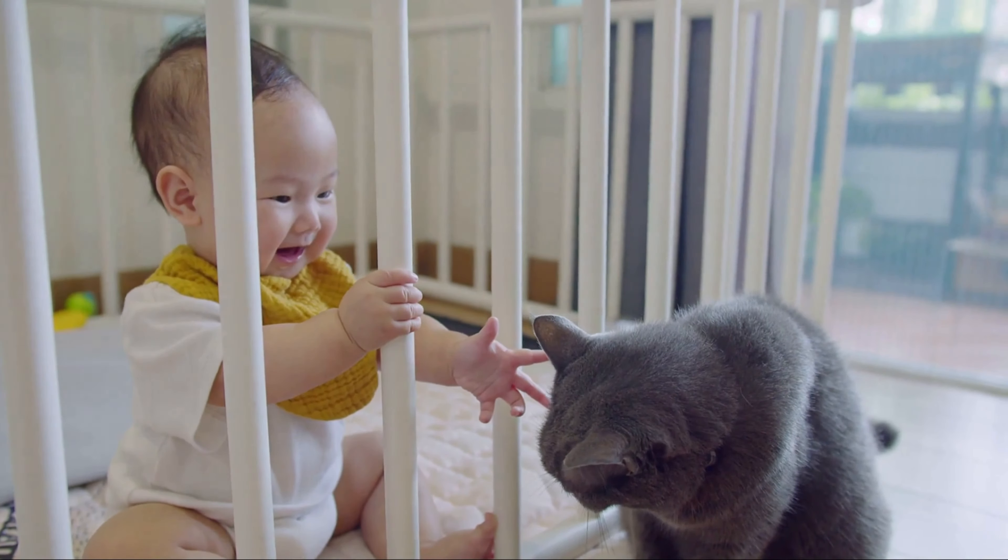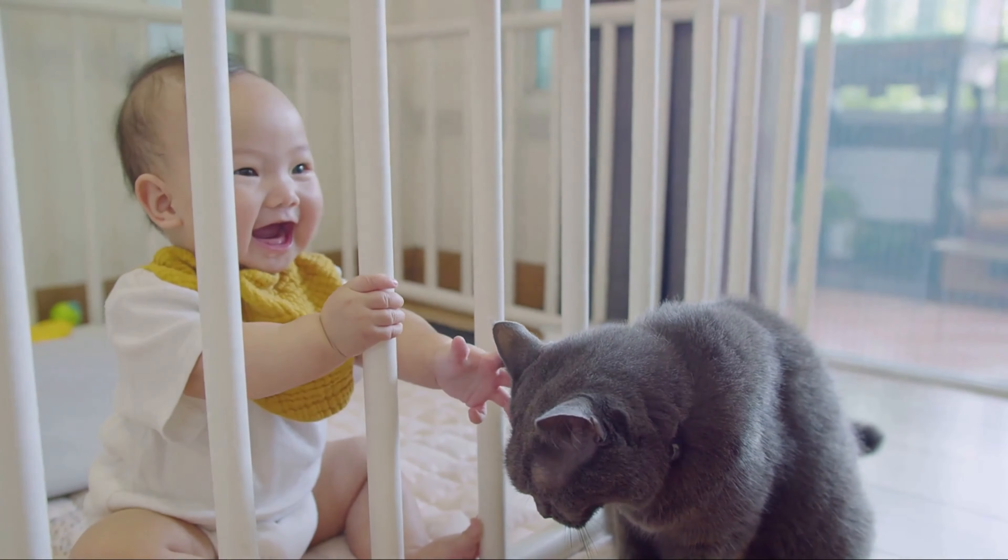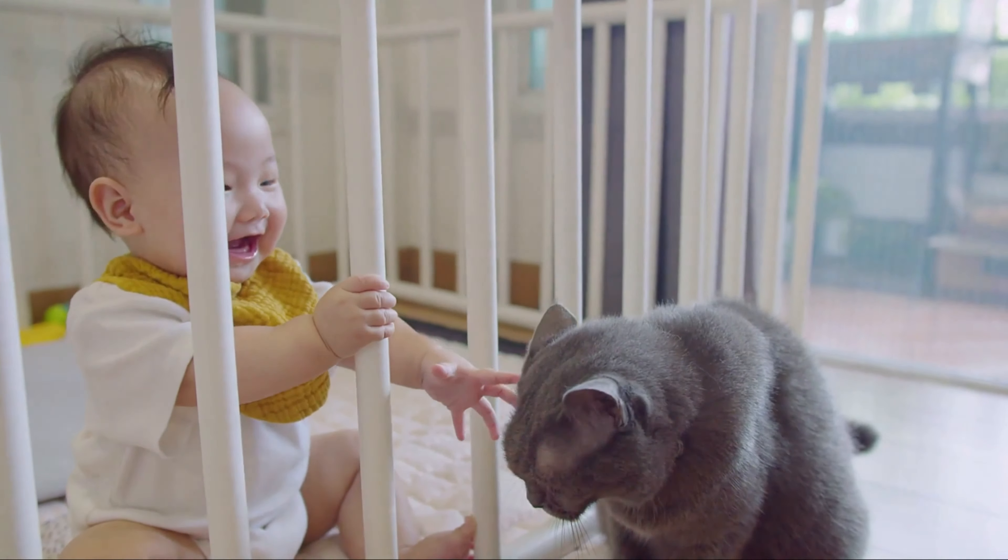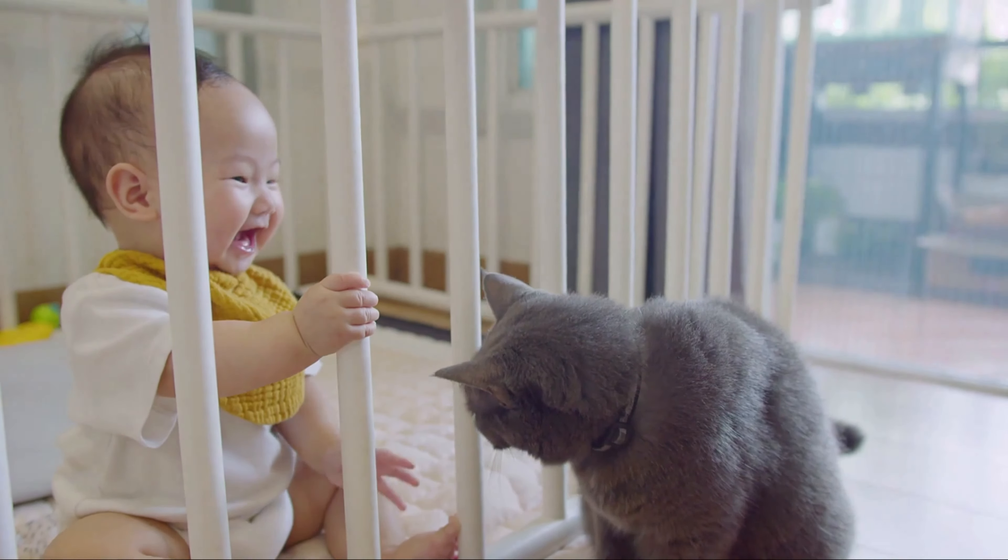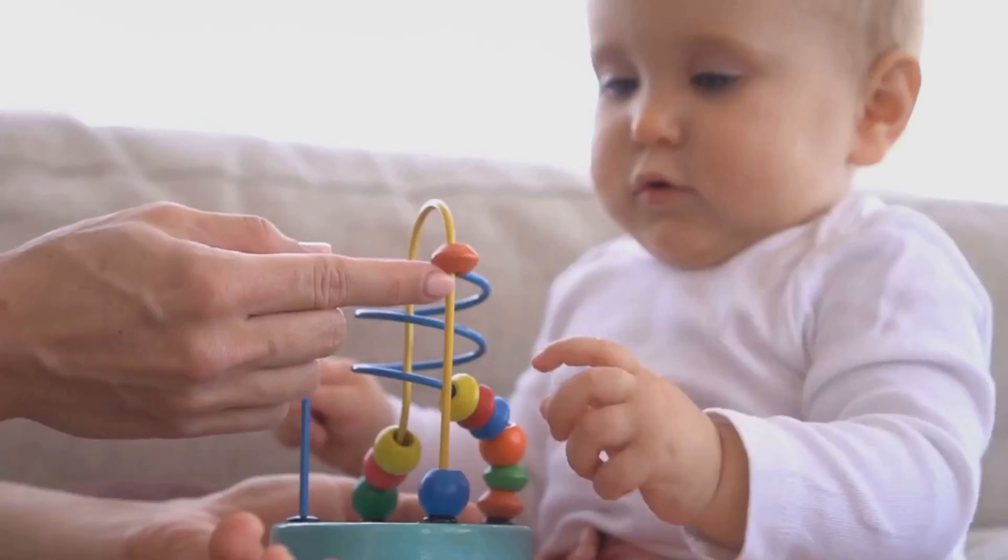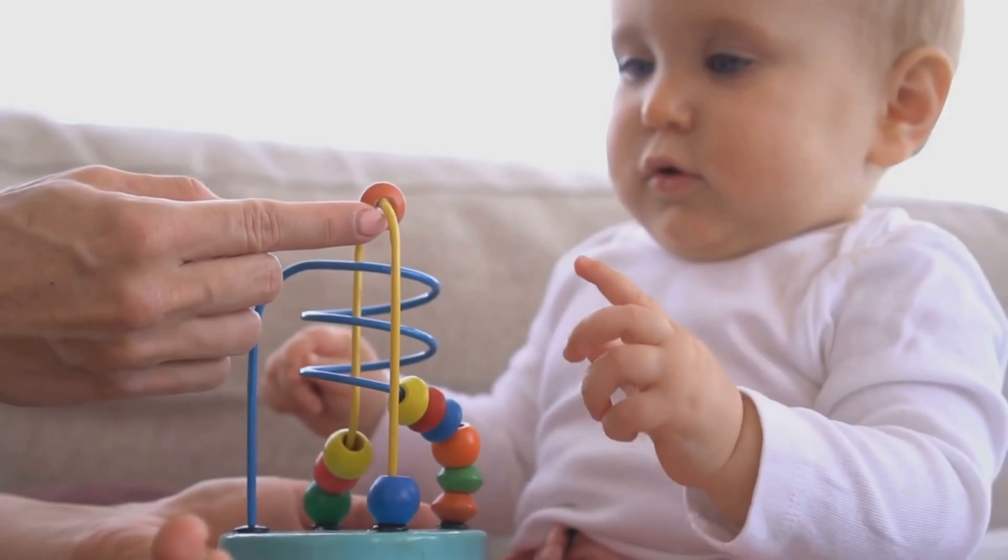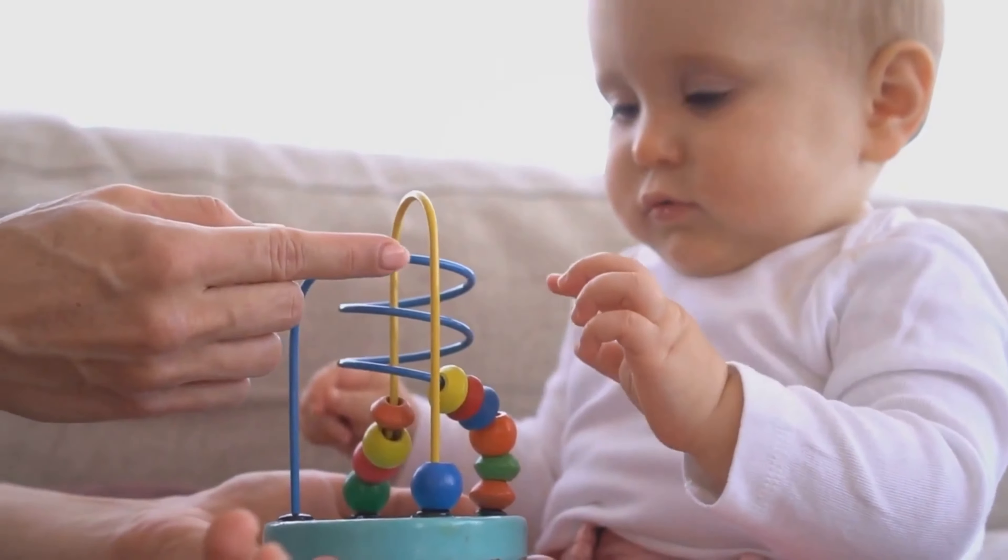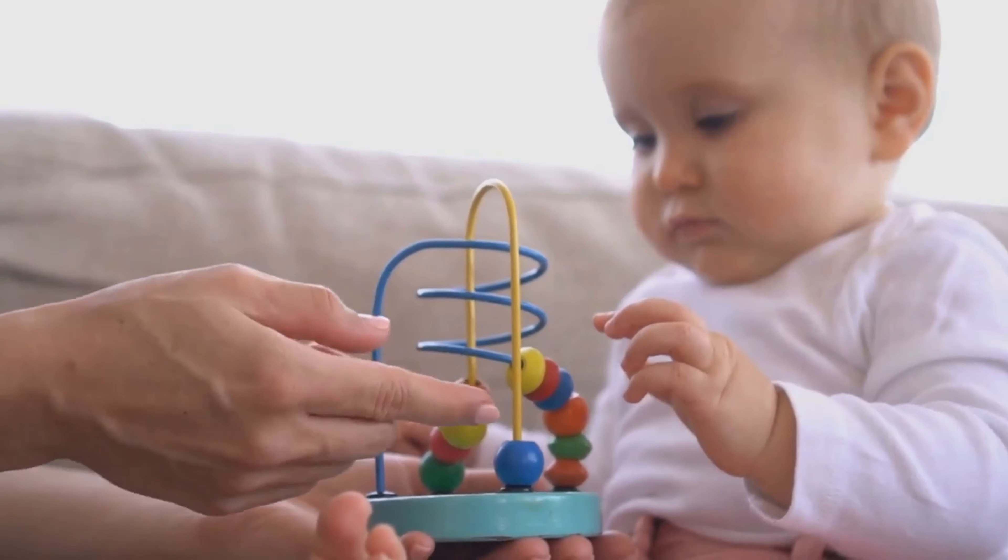It involves feeding computers a ton of data and letting them figure out how to process it. Just imagine a toddler learning to recognize a cat. They don't need to be told every little detail about what a cat looks like. They learn from examples, and over time, they can reliably identify a cat.